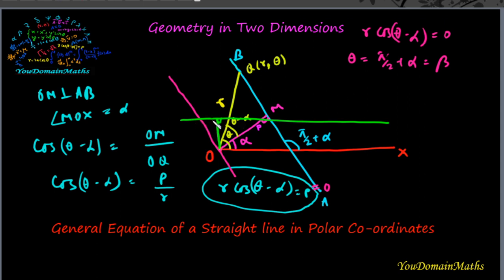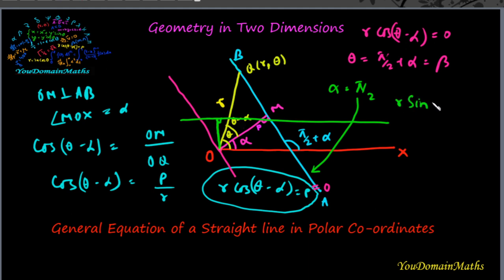If a straight line is parallel to the initial line OX, then the perpendicular from the pole to the straight line makes an angle of 90 degrees with the initial line, so alpha equal to 90 degrees. Putting these values in the equation, we get r·sin(theta) equal to p. This is the equation of a straight line which is parallel to the initial line.